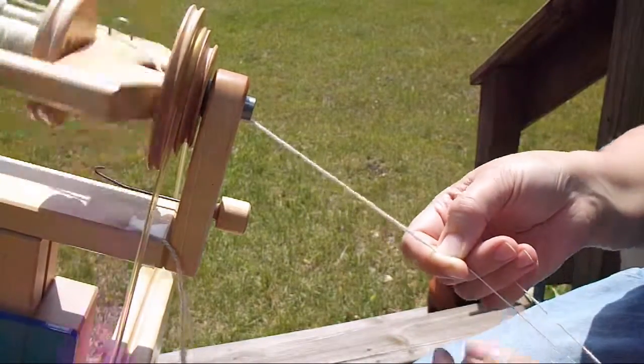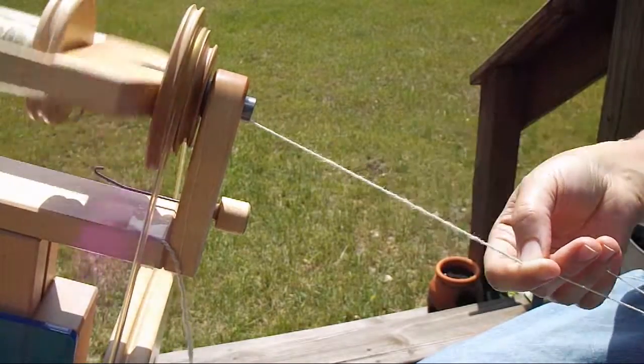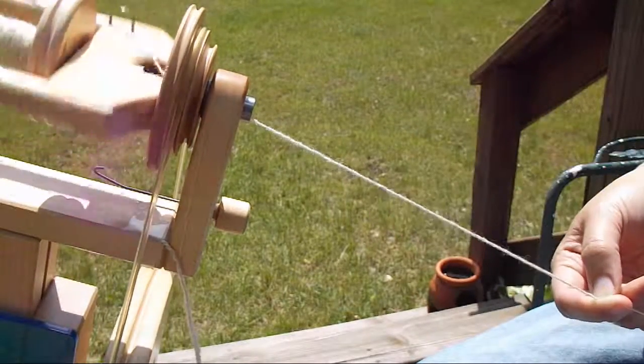And so from that sample I know that I'm looking at about a 40 degree angle of twist in the plied yarn.